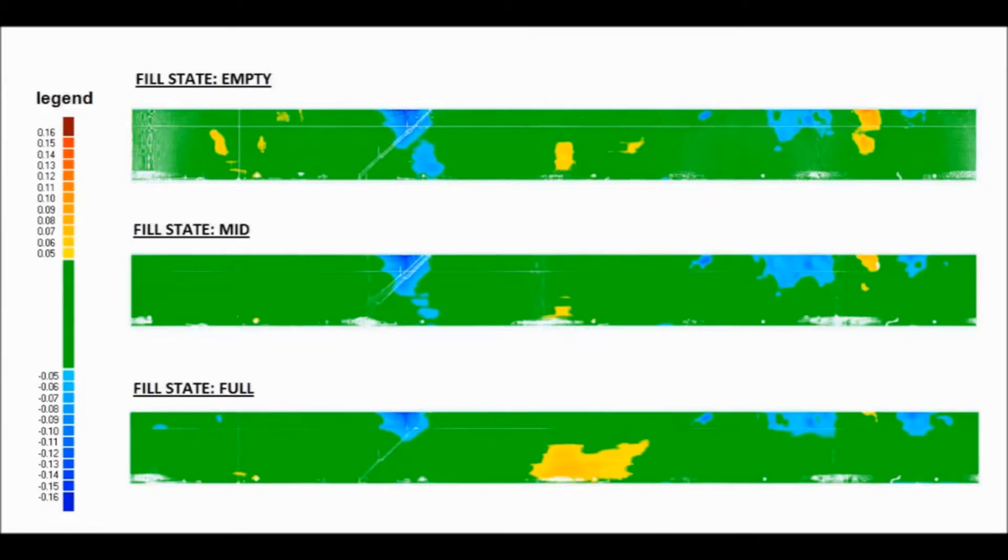This makes the larger deformations more visible and we can clearly see that when the tank is full, the amount of inward deformation, coloured blue, is reduced and the amount of outward deformation, coloured yellow, is increased.